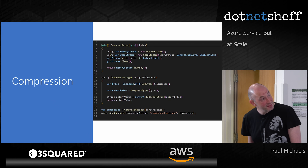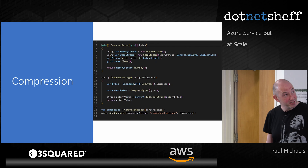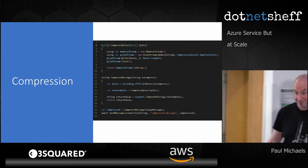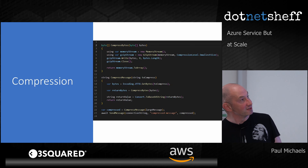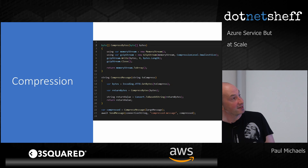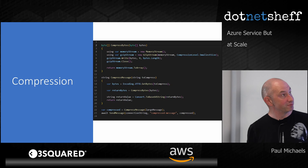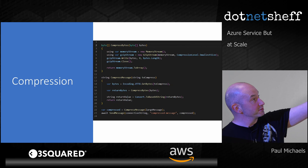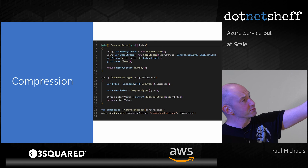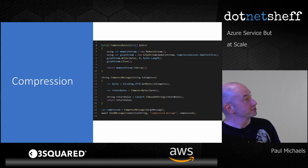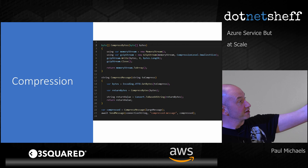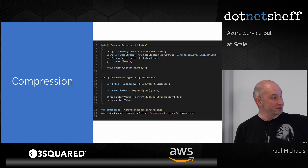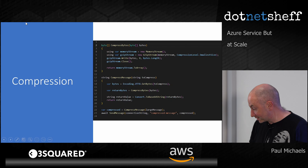Here's a code example. Basically just setting up a memory stream at the top, setting up a GZip stream, writing into that stream, closing it off and then returning it. At the bottom, as an example, it just compresses the message and then sends it on.